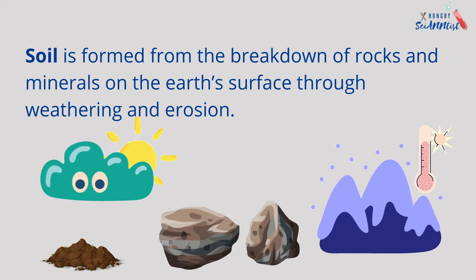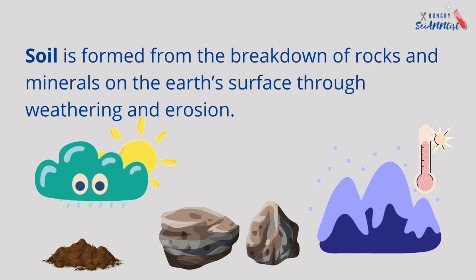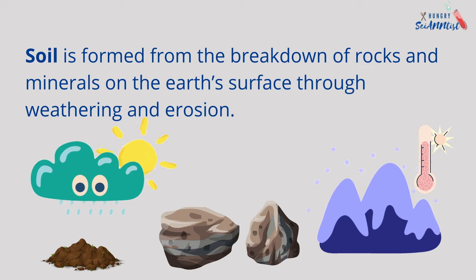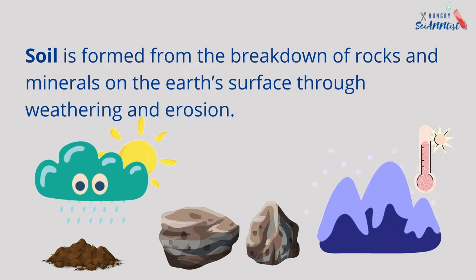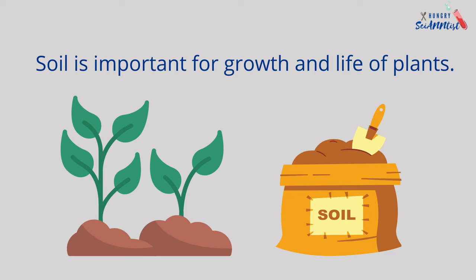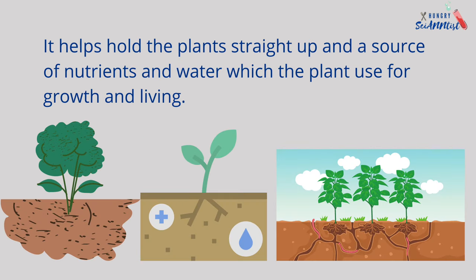Soil is formed from the breakdown of rocks and minerals on the earth's surface through weathering and erosion. Soil is important for the growth and life of plants. It helps hold plants straight up and is a source of nutrients and water which plants use for growth and living.